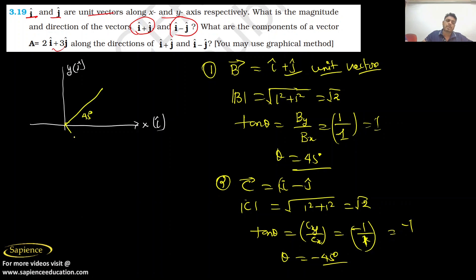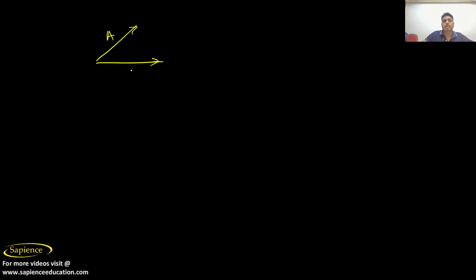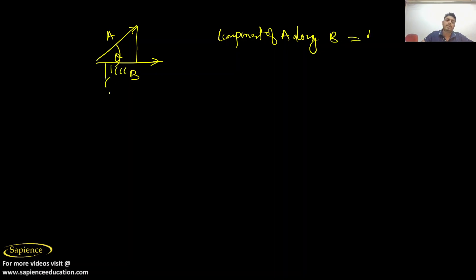So θ equals minus 45 degrees. If plus 45 degrees is measured above the axis, then minus 45 degrees is below it. Now for the next part, vector A has components 2i plus 3j. We need to find the component of A along B (i+j) and along C (i-j). The component of A along a direction is given by A cos θ.